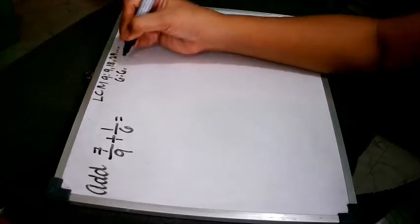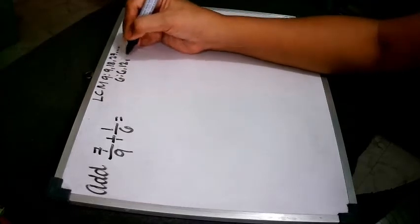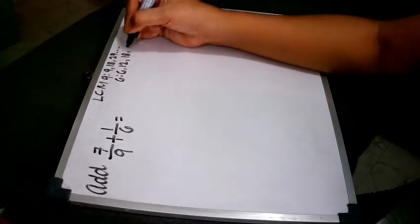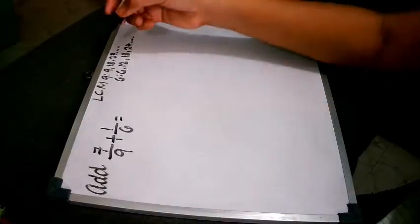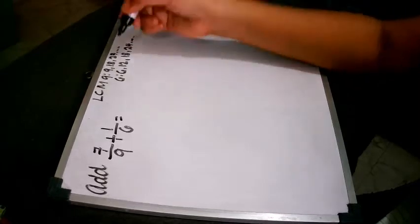we have 12, we have 18, we have 24 and so on. There are a lot of them, unending. But as you can see, we will not go on because we can already see that there is 18 there.